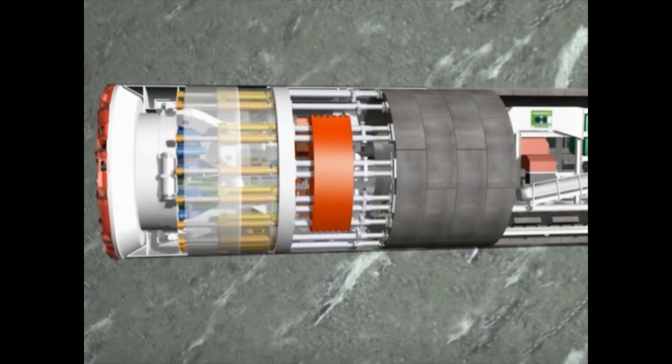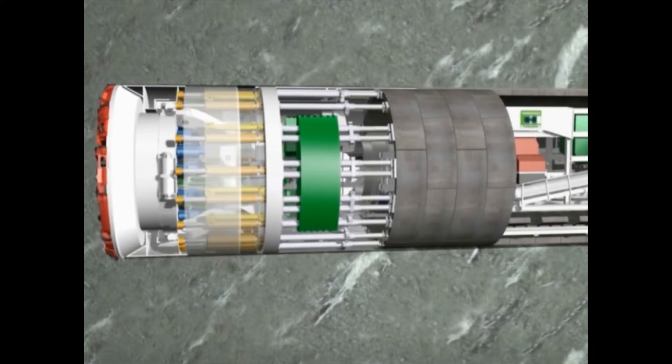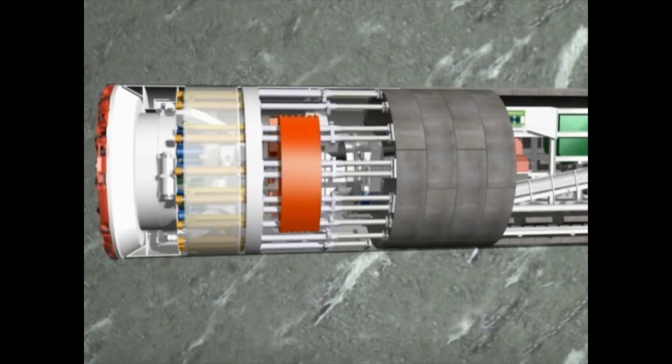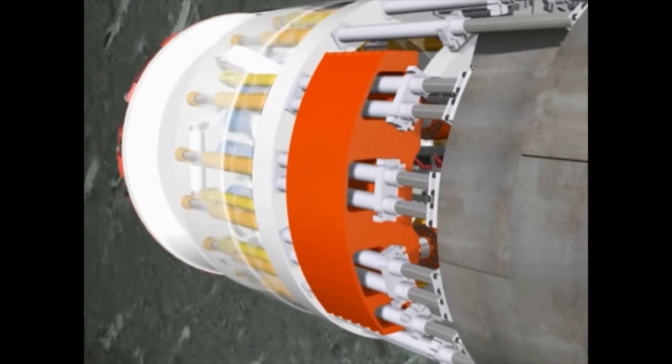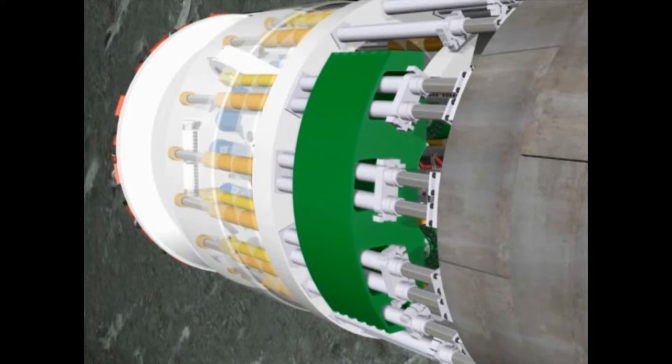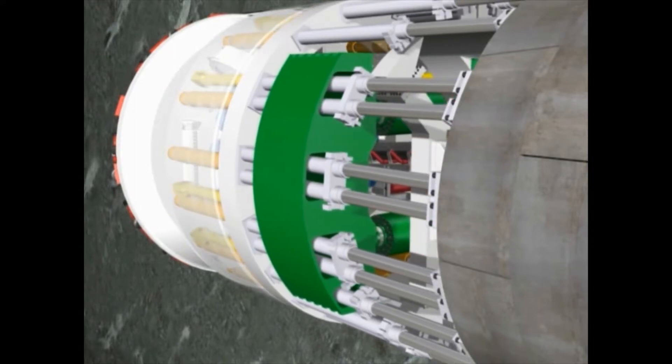After completion of a stroke, the gripper shoes are retracted, and the rear section of the machine is pushed forward against the front shield with the auxiliary thrust cylinders. The re-grip phase takes only a few minutes. Subsequently, the next section can be excavated.